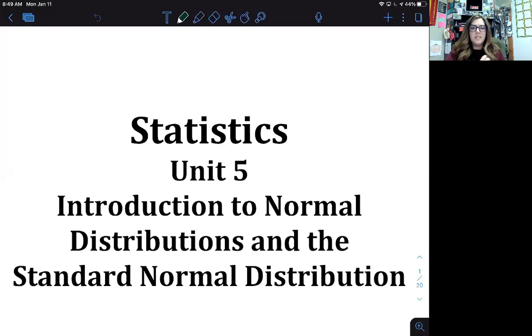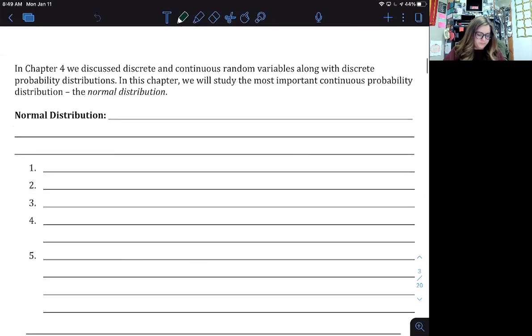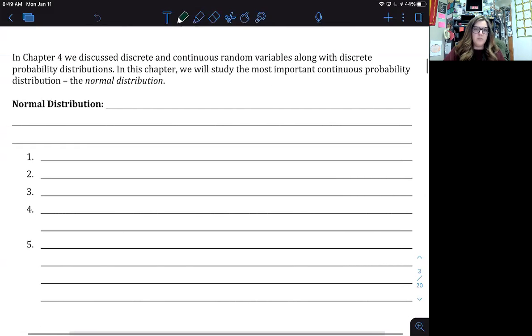Okay, so statistics unit five. We're looking at the introduction to the normal distributions and the standard normal distribution. Looking at the first section, we're going to do a little bit of review. In chapter four we discussed discrete and continuous random variables along with discrete probability distributions. So now we're going to be looking at continuous probability distributions, and that most important aspect is the normal distribution.